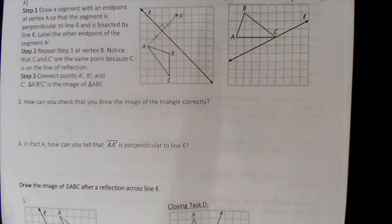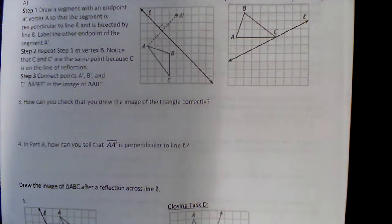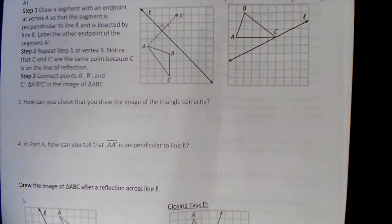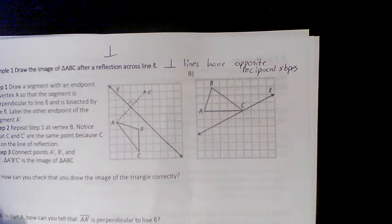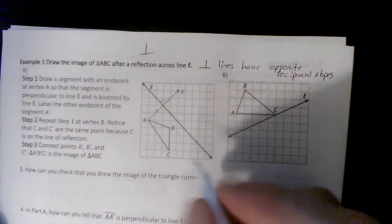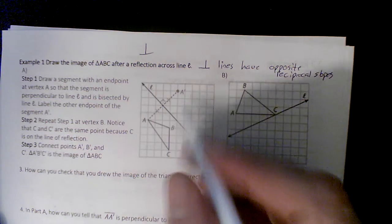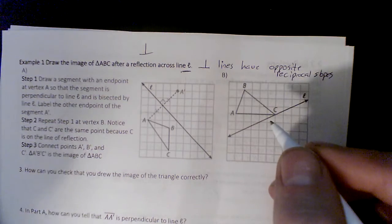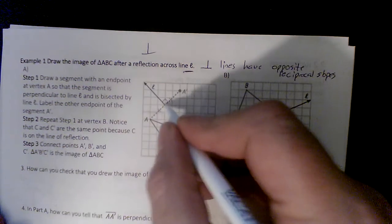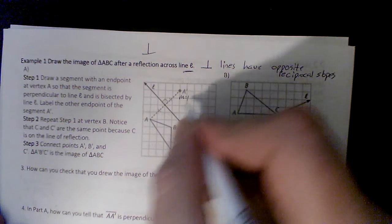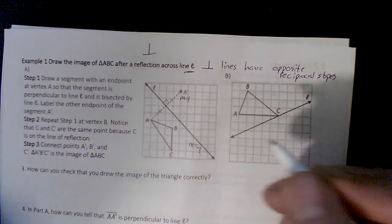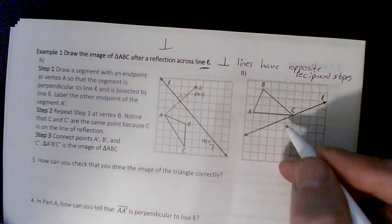We are moving on to some more difficult problems. I wrote a note up here that says perpendicular — this mark means perpendicular lines have opposite reciprocal slopes. We're going to need that for these problems. This slope is 1 and this slope is negative 1; those are opposites and reciprocals because 1 is its own reciprocal.